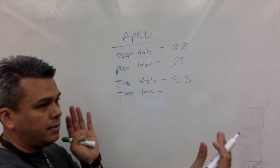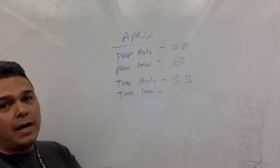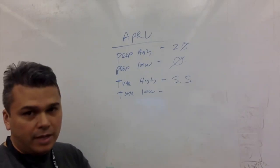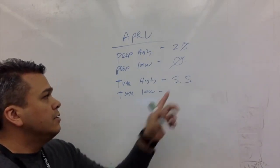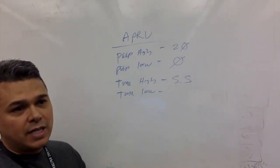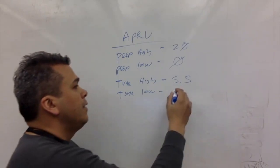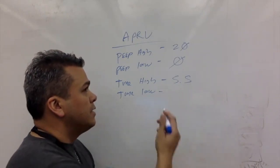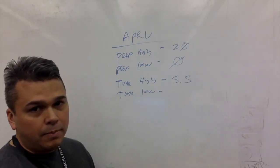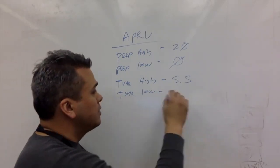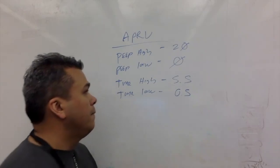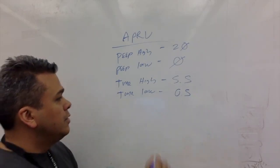Time high is the duration that we're going to have the patient take their top breath at the PEEP high. This is where we're going to pop open the alveoli. The time high is going to be around 5.5 seconds. This is kind of an aggressive order. We want to pop them open, we're not playing around.